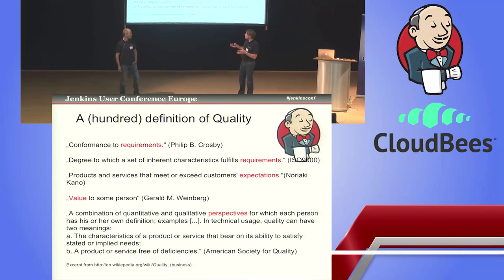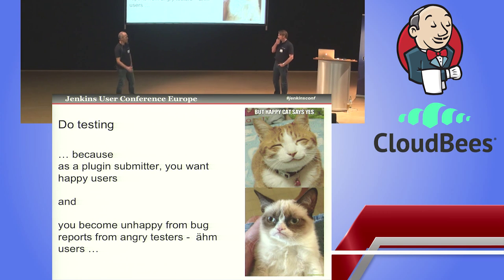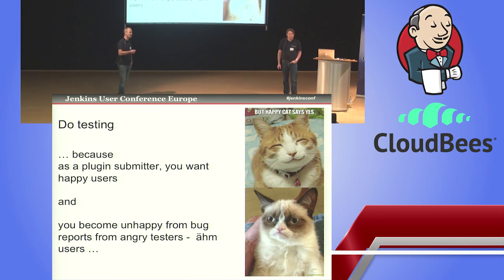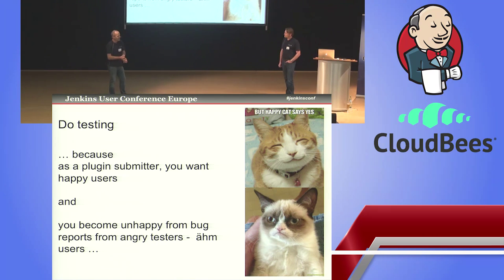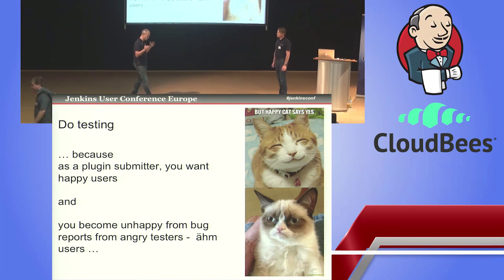It seems to be something subjective, something with a perspective into it, and I don't really know what quality means for my plugin. These are more or less some regulatory things like ISO 9000. In our context, it looks different. In Jenkins, when you provide a plugin, you just want it to work — and it works for your users. Because nothing is more bad if a plugin doesn't work right and it doesn't make your user happy.